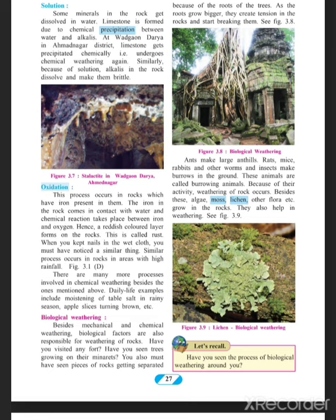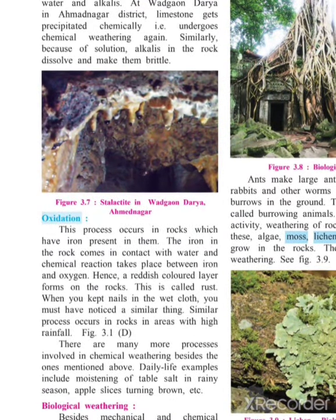Let us see a few more examples. Some minerals in the rock get dissolved in water. Limestone is formed due to chemical precipitation between water and alkalis. Because of the solution, alkali in the rock dissolves and makes it brittle — you can see the example in figure 3.7. The third example is oxidation. In oxidation, the process happens in rocks which have iron inside them. The rocks become reddish in color and start rusting. It happens where there is very high acid rainfall. This is the process of oxidation.